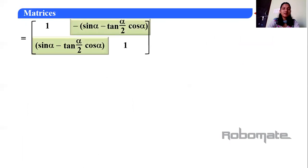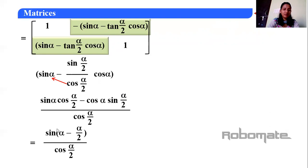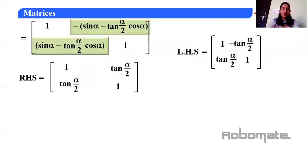For the off-diagonal element: sin α − tan(α/2)·cos α. Writing tan(α/2) = sin(α/2)/cos(α/2) and taking LCM, we get sin α·cos(α/2) − cos α·sin(α/2), which is the formula sin(A−B) = sin A cos B − cos A sin B with A = α and B = α/2. This gives sin(α/2)/cos(α/2) = tan(α/2). So RHS equals [1, −tan(α/2); tan(α/2), 1] = I+A = LHS. Hence verified.